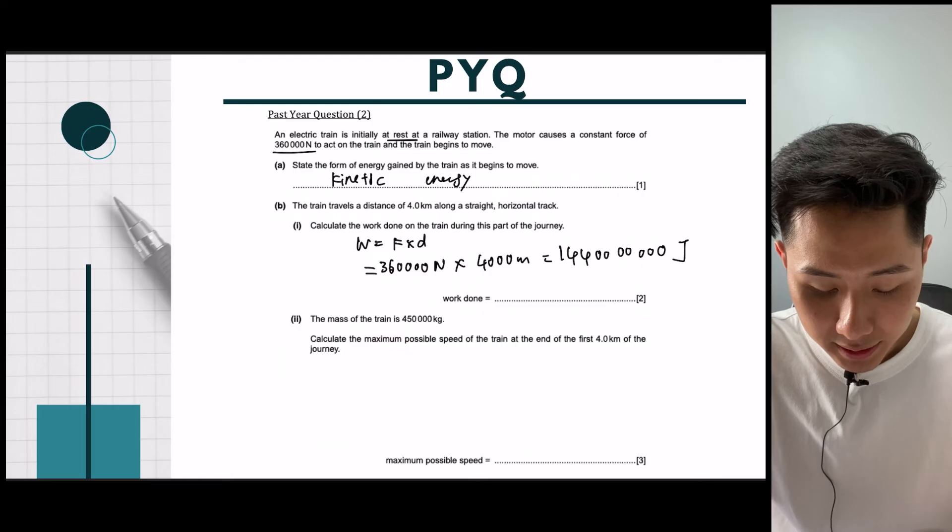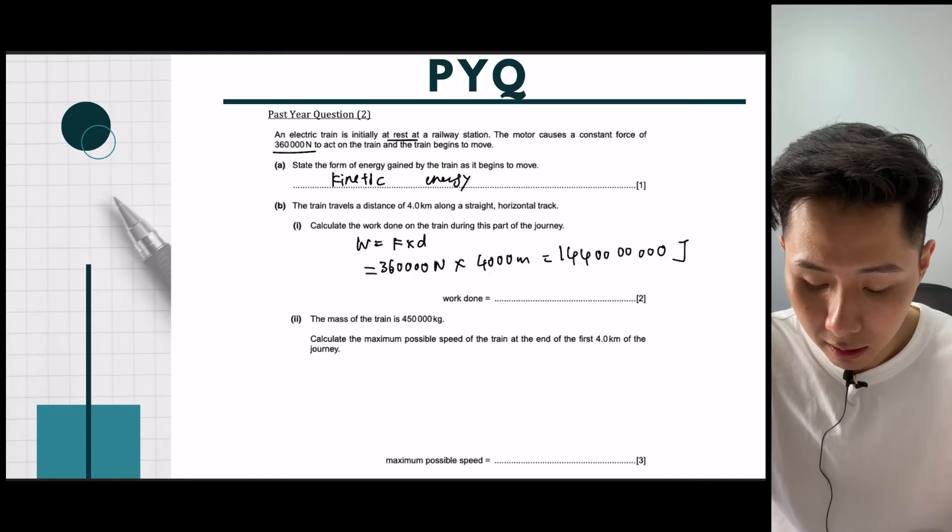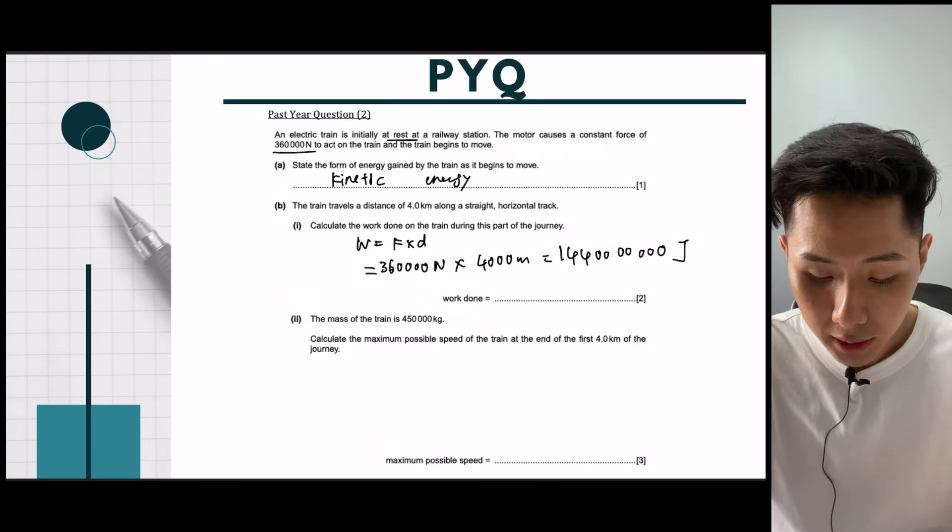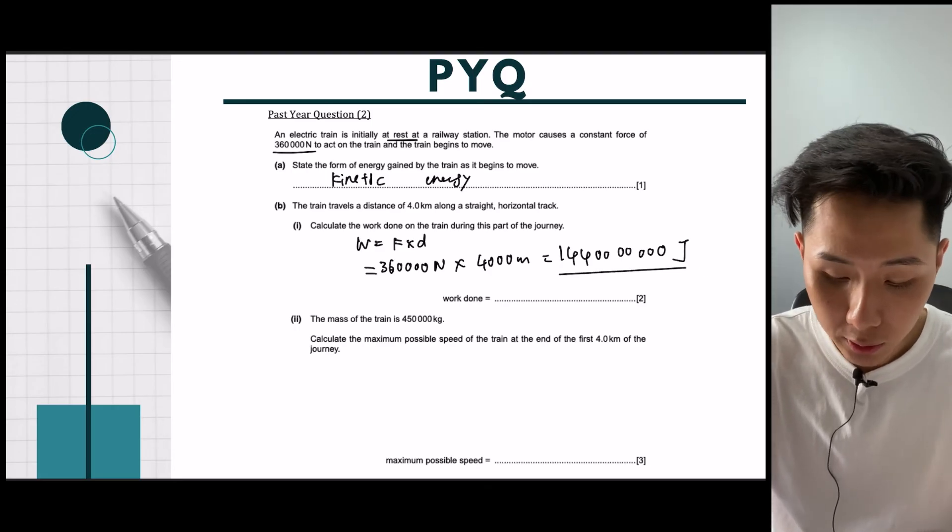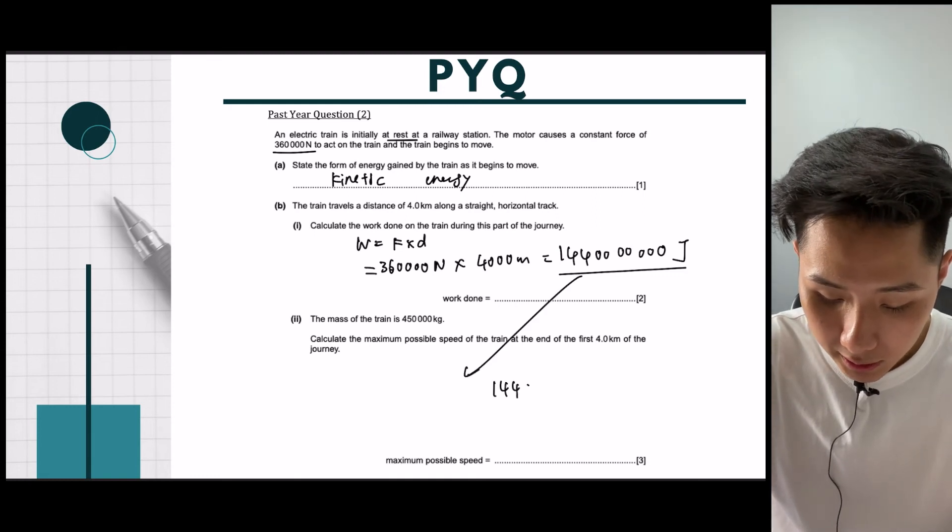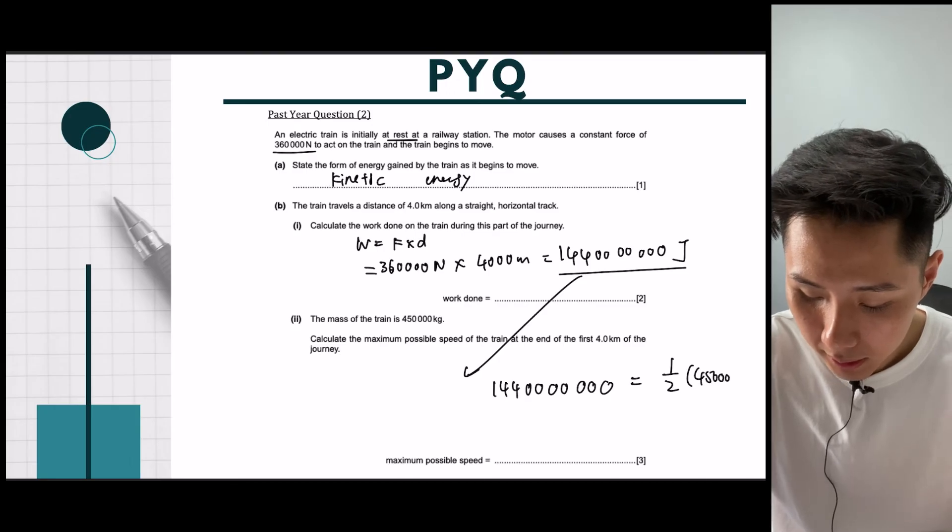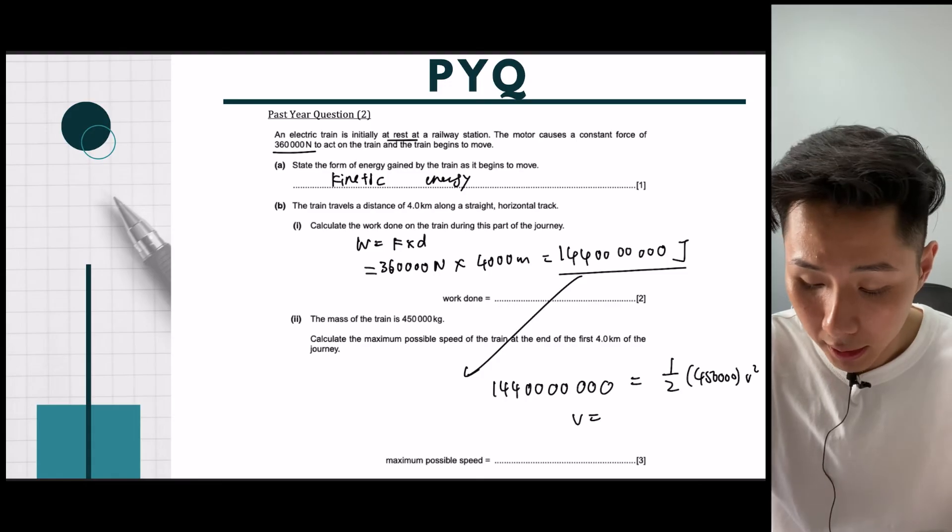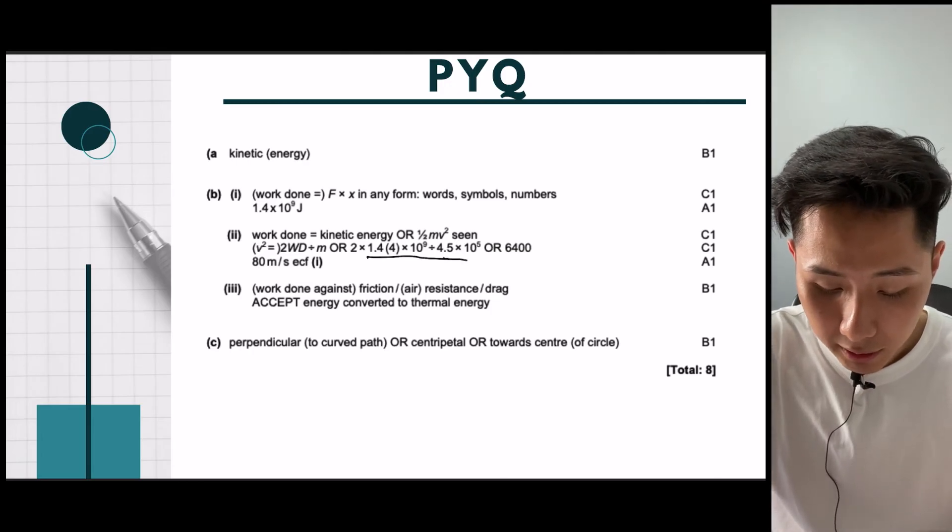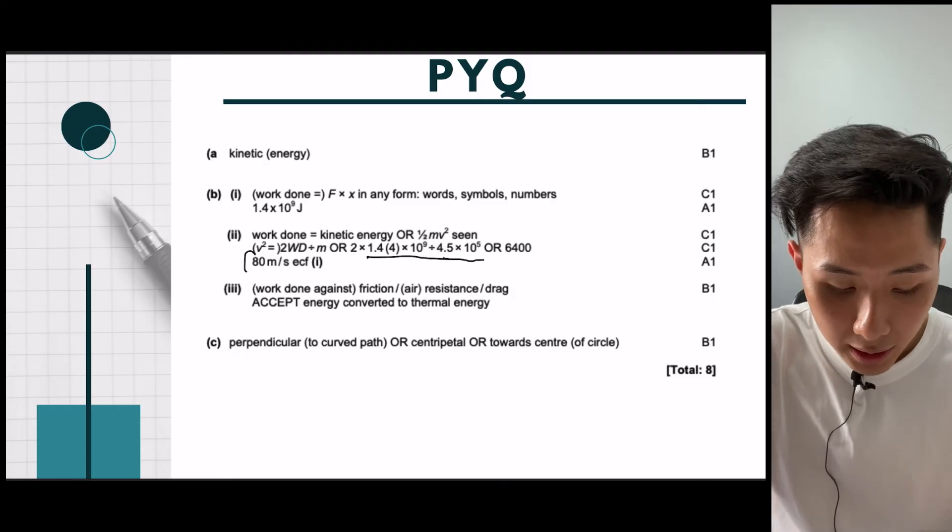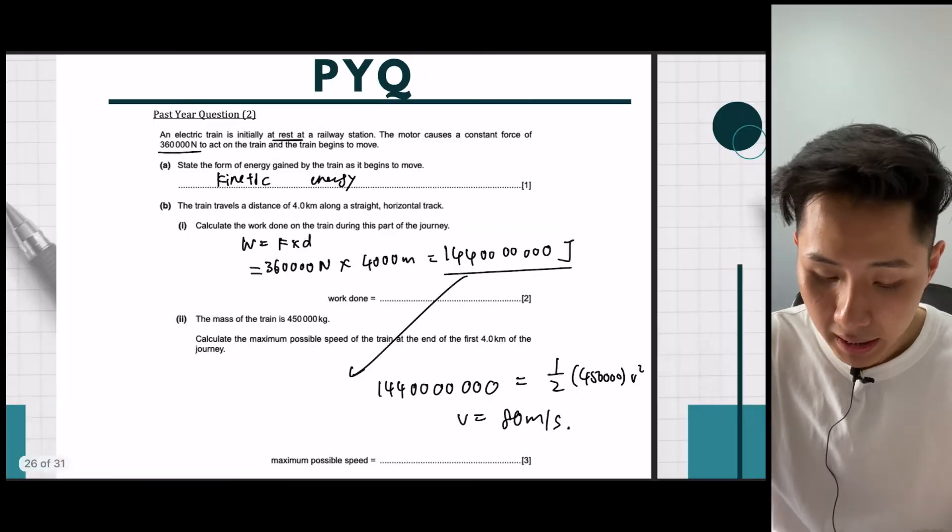Second question. The mass of the train is 450,000 kg and calculate the maximum possible speed at the end of the first 4km journey. So that's the amount of work that is done. So I'm just going to use this value here to calculate. So that's the amount of kinetic energy gained by the train. And then I can find my velocity. So by using this, we can see that you can use exactly the same thing. And then divide it by the mass of the train. And then you will get the final velocity. So if I were to sub in everything into the calculator, as you see in the answer, I'll get 80 m/s.